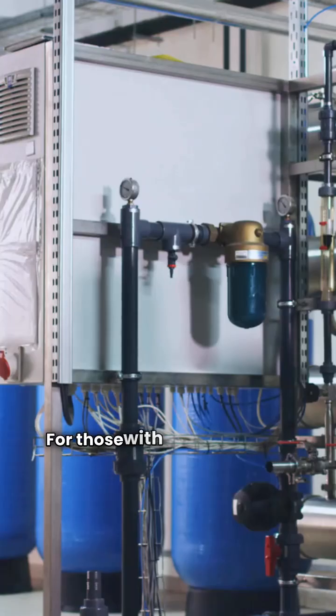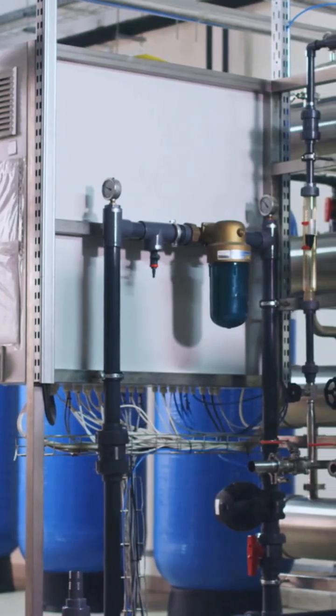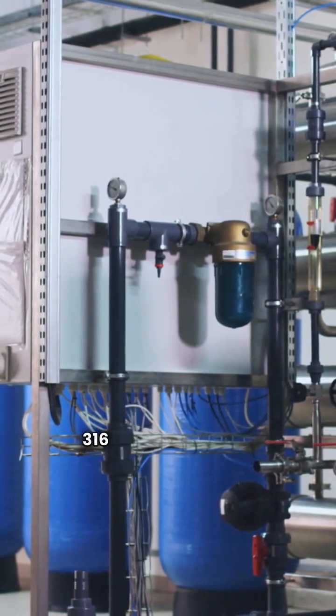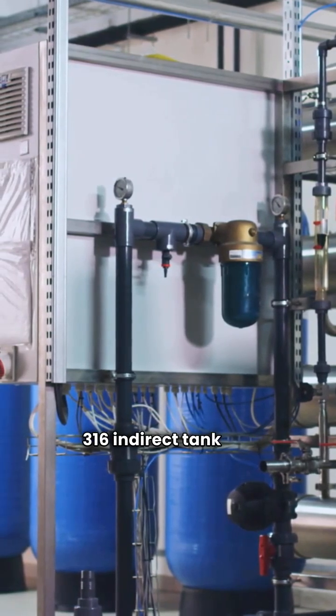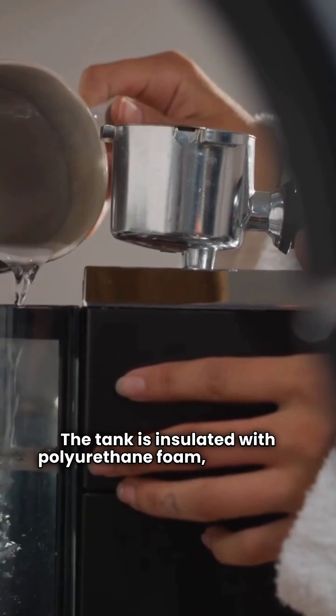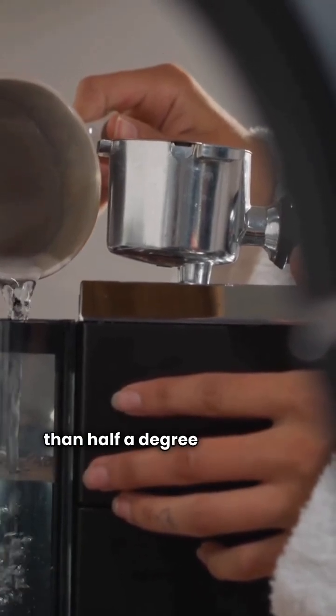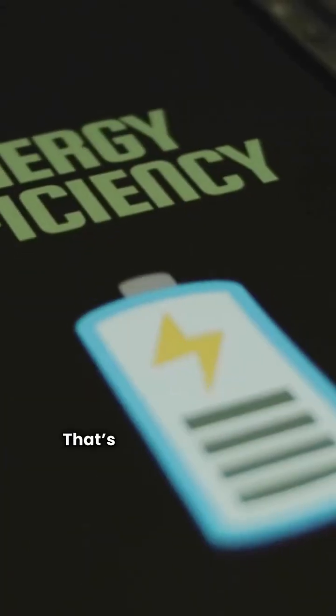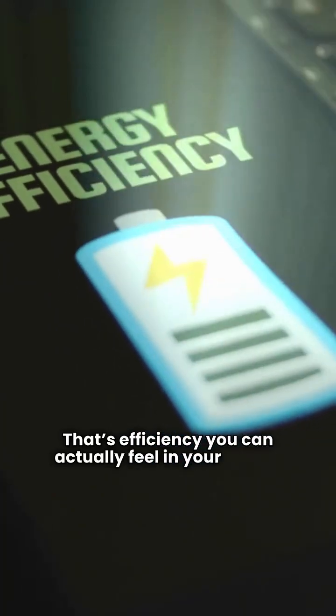For those with high hot water demands, their solo boiler paired with a smart 316 indirect tank is a powerhouse. The tank is insulated with polyurethane foam, losing less than half a degree of heat per hour. That's efficiency you can actually feel in your wallet.